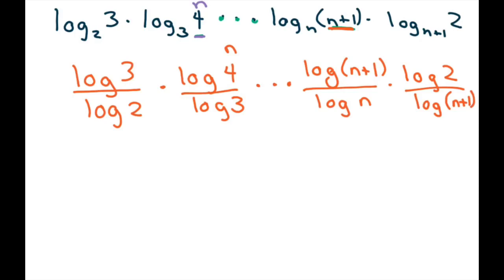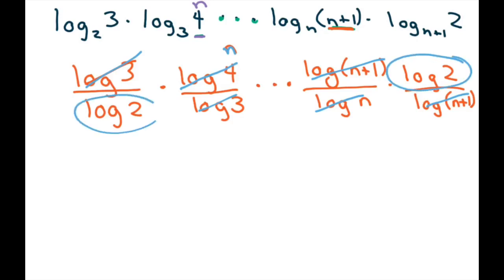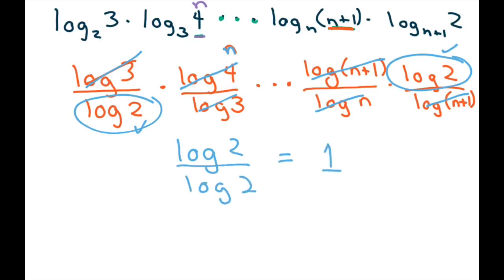So when you cancel things out — let's use a different color — you cancel out these, and you cancel out these. You can also cancel out these, because all this means we could have written this as n, and you cancel those out. So we're really just left with these two terms. You can write this as log 2 divided by log 2. You cancel everything out and you're going to get 1. So that's your final answer.